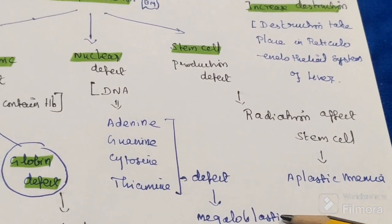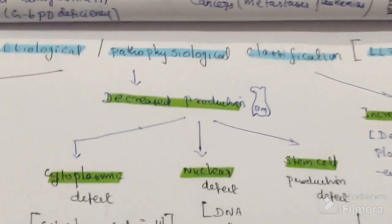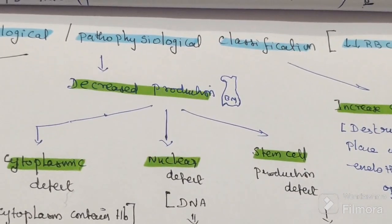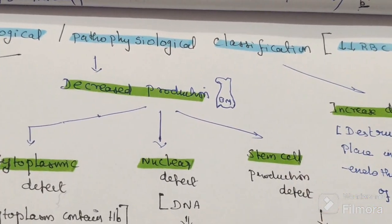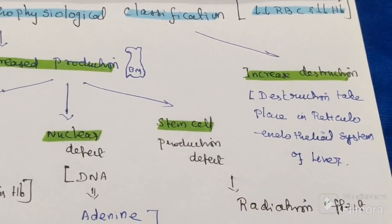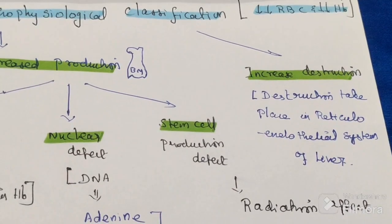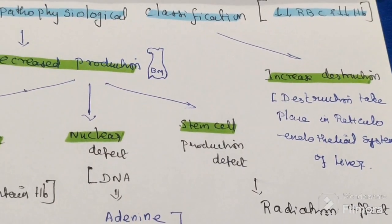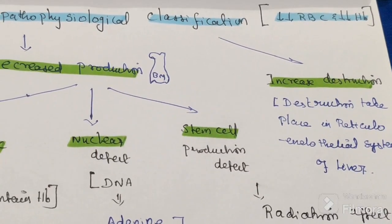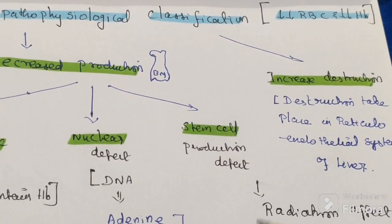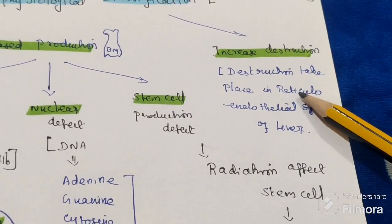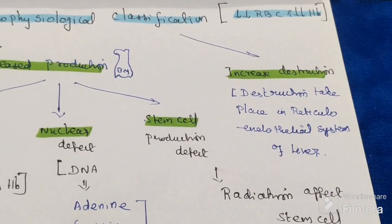The third pathophysiological cause is increased destruction. Normal production takes place, but there is increased destruction. Destruction takes place in the reticuloendothelial system of the liver and especially the spleen. Increased destruction causes anemia.